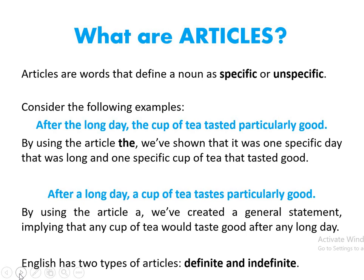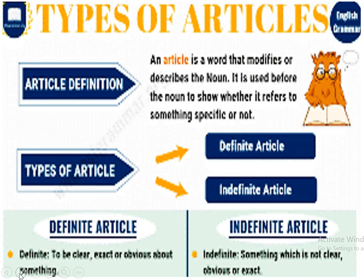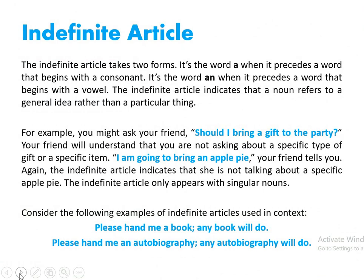If we write the sentence differently — 'After a long day, a cup of tea tastes particularly good' — using the article 'a' creates a general statement implying that any cup of tea would taste good after any long day. So in English there are two types of articles: definite and indefinite. The indefinite article can be of two forms: 'a' when it precedes a word beginning with a consonant, and 'an' when it precedes a word beginning with a vowel. The indefinite article indicates that the noun refers to a general idea rather than a particular thing.